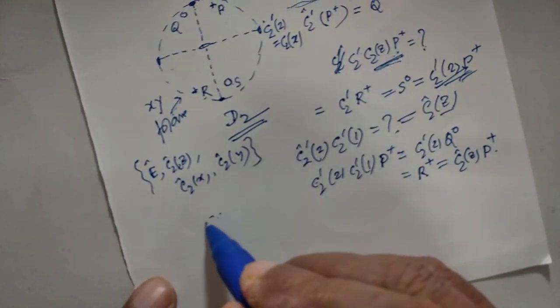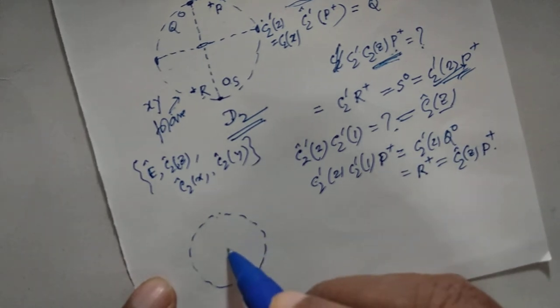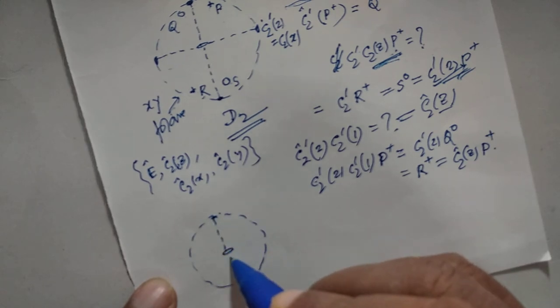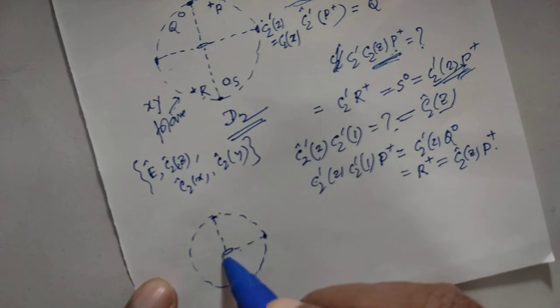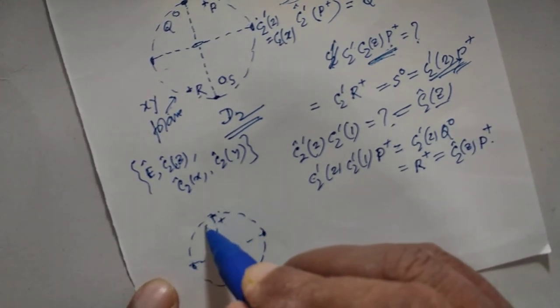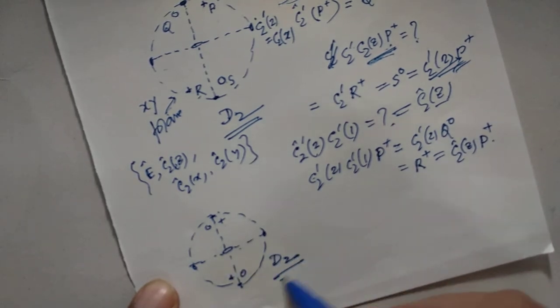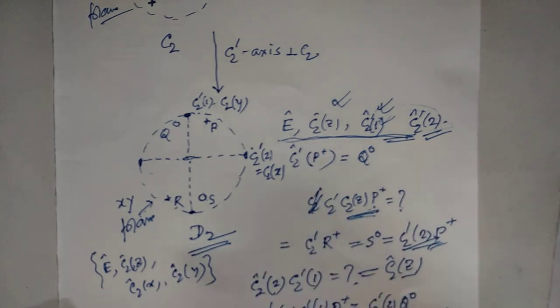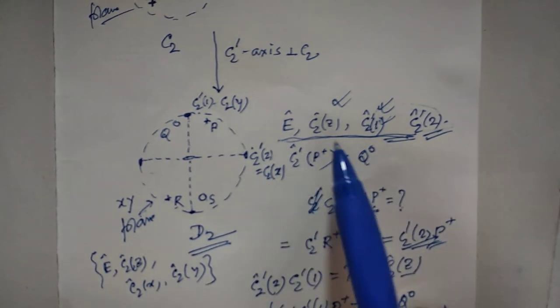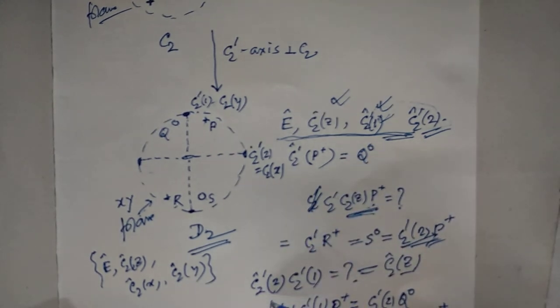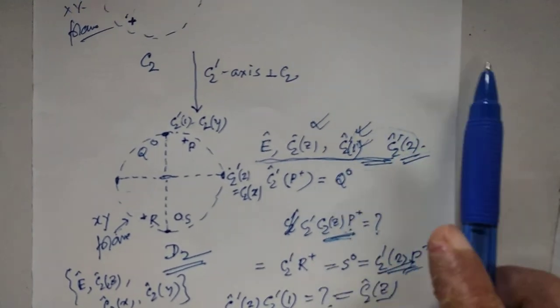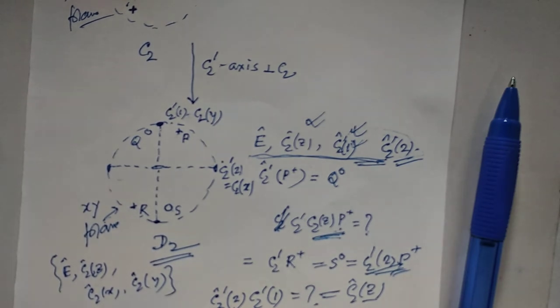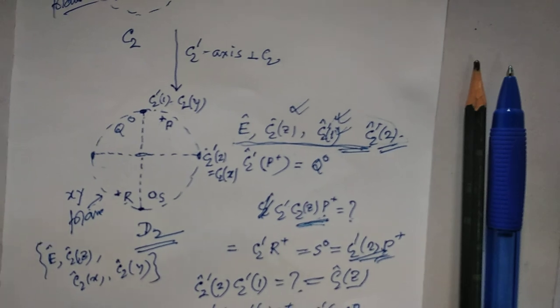Using this diagram, you can verify that any two operators of this group commute. By carrying out similarity transformations, you will find that each operator belongs to its own class — every operator constitutes a single class. I will discuss more about such diagrams for other point groups in my next videos. Thank you very much for watching.